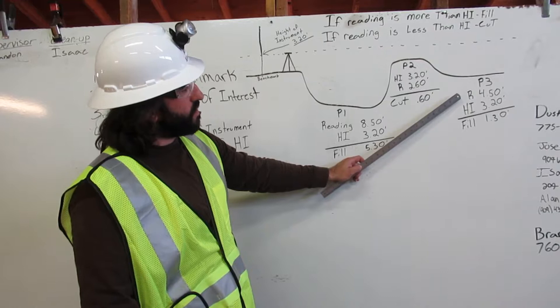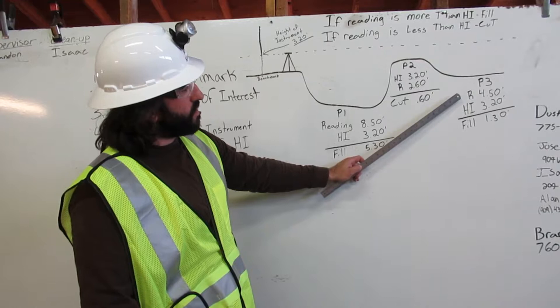At point three, our reading was 4.50 feet. Our height of instrument was 3.20 feet. And when we subtract those, we get 1.30 feet and we are going to fill. Step six, we communicate.